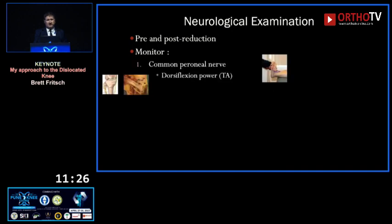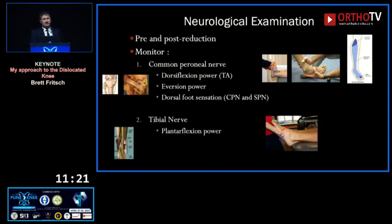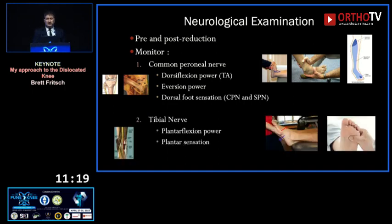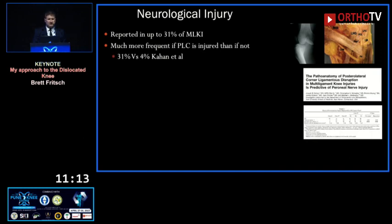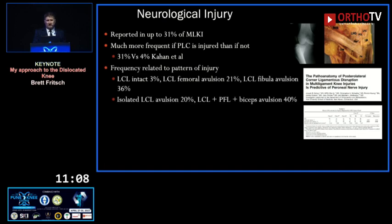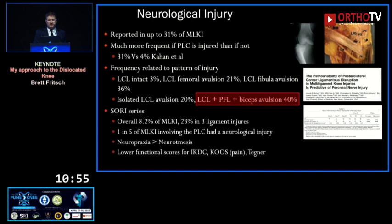Neurological examination should be done pre and post reduction. Look at common peroneal nerve via dorsiflexion power, eversion power, and dorsal sensation; tibial nerve with plantar flexion power and plantar sensation. About a third of cases will have a neurological injury. It's much more common if the posterolateral corner is injured — 30% versus 4% if it's not, per the review by Kahn. Complete disruption of the LCL, popliteofibular ligament, and biceps avulsion carries a 40% rate of common peroneal nerve injury.